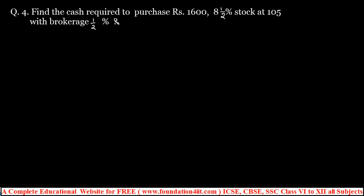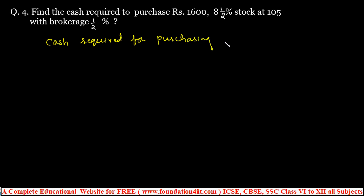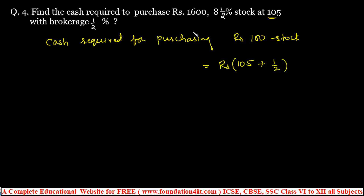See one more similar problem: find the cash required to purchase rupees 1600 in 8.5% stock at 105 with brokerage 1/2. It is purchasing, so brokerage should be added. For rupees 100 stock: cash required = 105 + 1/2 = 211/2. Out of 100 the market price is 105, and brokerage is 1/2 percent of 100.